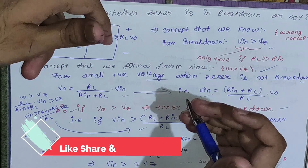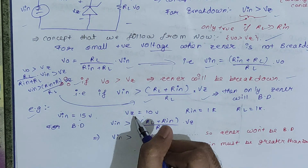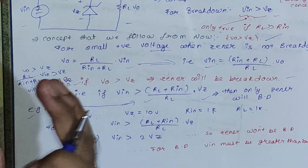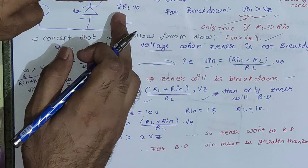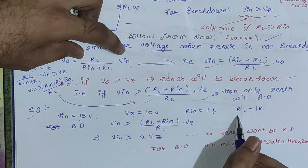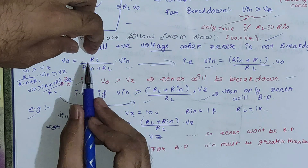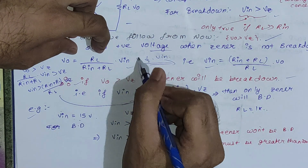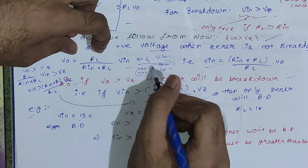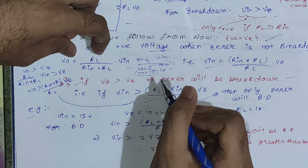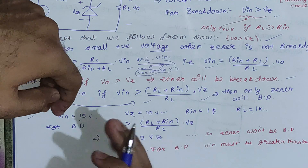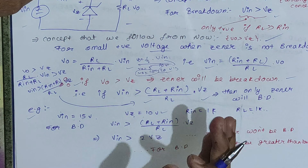Let's take a numerical example: Vin = 15V, Vz = 10V, Rin = 1kΩ, RL = 1kΩ. For breakdown, voltage across the Zener (Vo) must be greater than Vz. Using the voltage divider: Vo = (1 / (1+1)) × Vin = Vin/2. If Vin = 10V then Vo = 5V; if Vin = 20V then Vo = 10V. For Vo > Vz, we need Vin > 20V. Since Vin = 15V is less than 20V, the Zener diode will not break down.